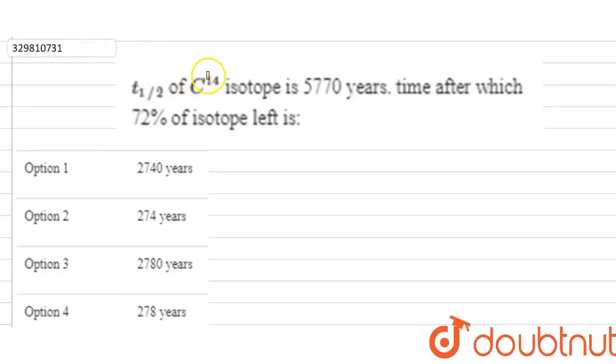So the question is: T half of C14 isotope is 5770 years, time after which 72% of isotope is left is how much? What are they asking? I have half life given, which is T half of my C14 isotope, which is 5770 years. I need to find the time after which 72% of my isotope is left.